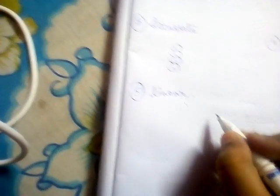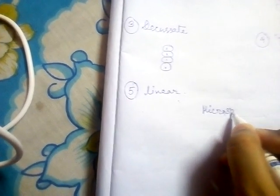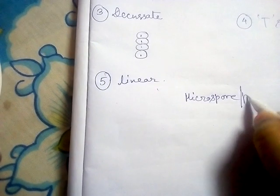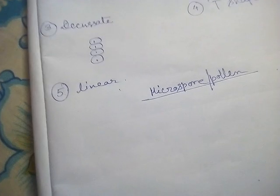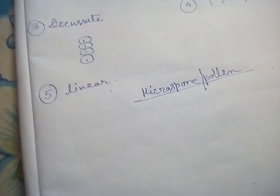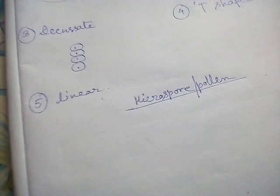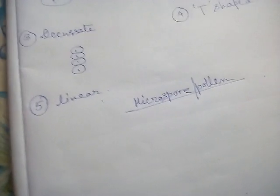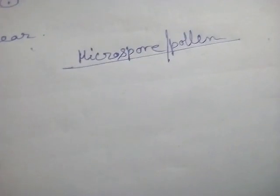Next I will discuss about the structure of microspores or pollen grains. Microspores may be of different shapes and sizes. A microspore is the first cell of the male gametophyte; from the microspore the male gametophyte will be developed, and within the male gametophyte male gametes are formed. In angiosperms, two male gametes are present in each male gametophyte.